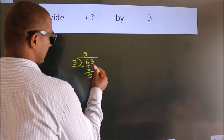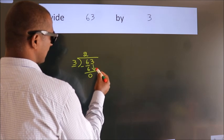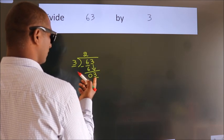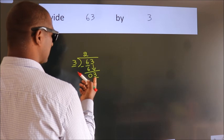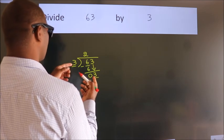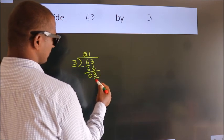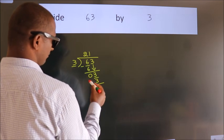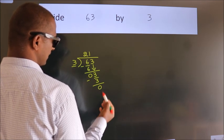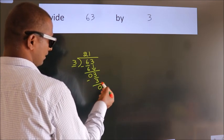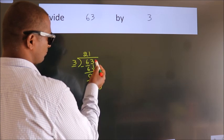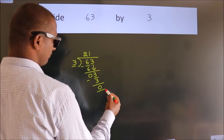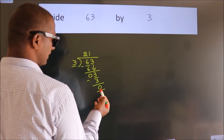After this, bring down the beside number — so 3 comes down. When do we get 3? In the 3 times table — 3 ones are 3. Now we subtract. We get 0. After this, there are no more numbers to bring down, and we got remainder 0.